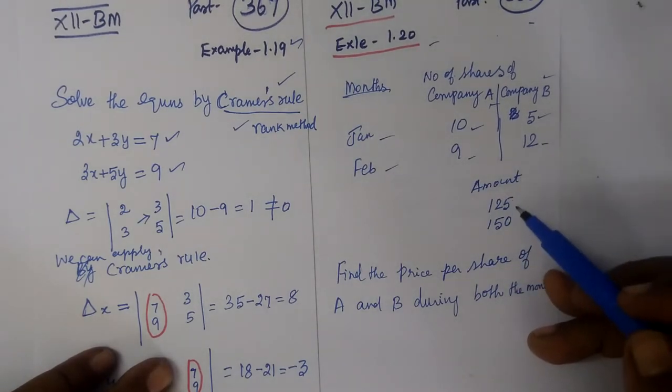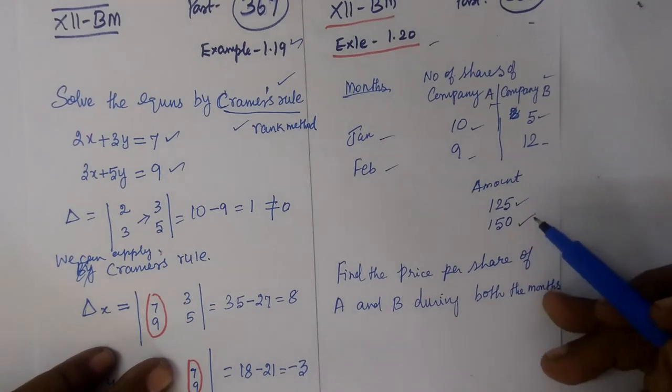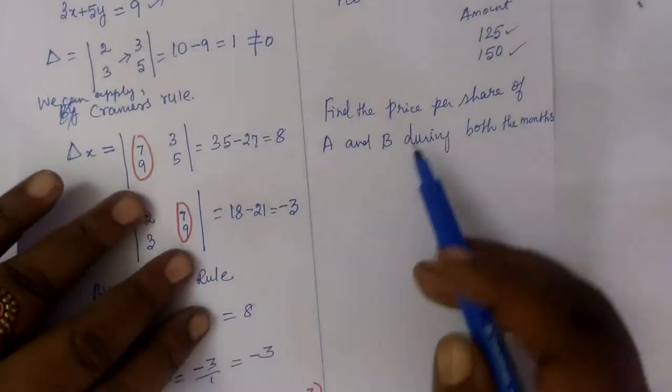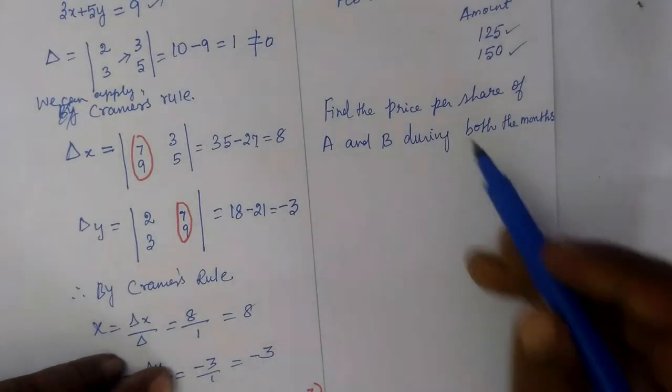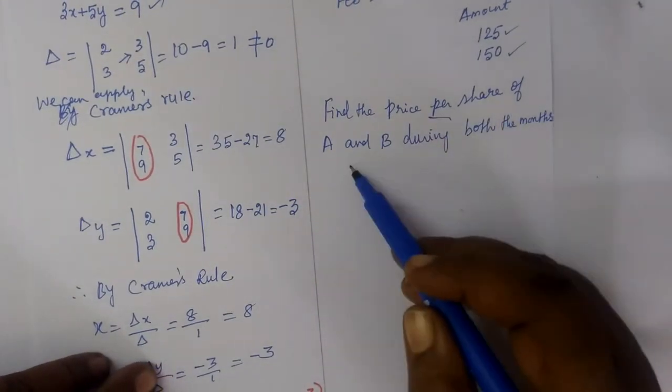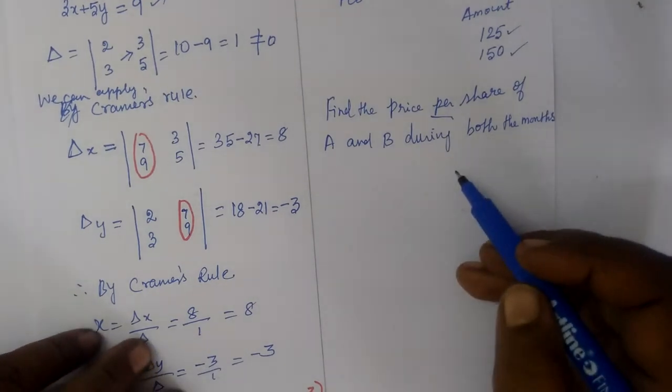Then 9 and 12 in February month. The amounts are 125 and 150. Find the price per share of company A and B during both months.